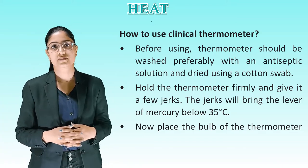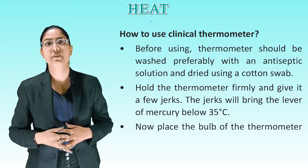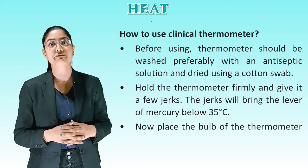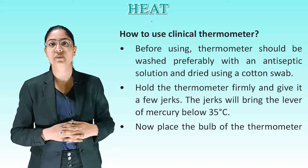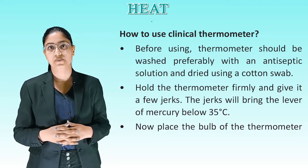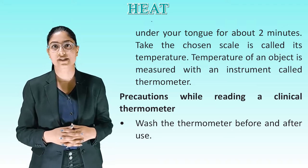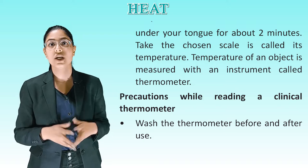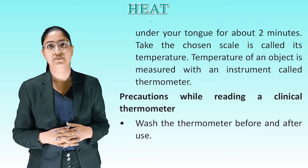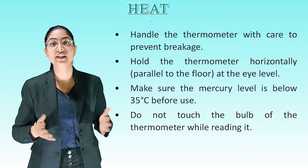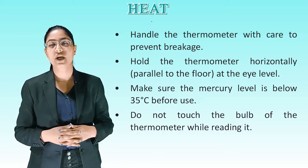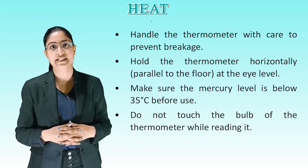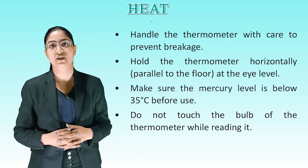How to use a clinical thermometer. Before using, wash the thermometer preferably with an antiseptic solution and dry with a cotton swab. Hold firmly and give it a few jerks to bring the mercury level below 35°C. Place the bulb under your tongue for about 2 minutes, then read the temperature. Precautions: Wash before and after use. Handle with care to prevent breakage. Hold it horizontally at eye level. Make sure the mercury level is below 35°C before use. Do not touch the bulb while reading.